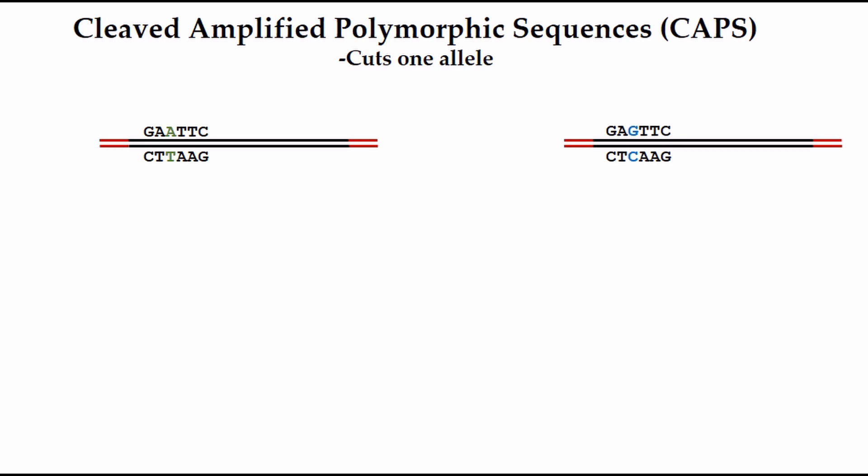Cleaved amplified polymorphic sequences, or CAPS markers, work by specifically cutting one allele of the sequence that was duplicated in PCR. A restriction enzyme, which cuts DNA of a highly specific sequence, is introduced to the samples. Some samples with one variant will be cut, while samples with the other variant remain intact.